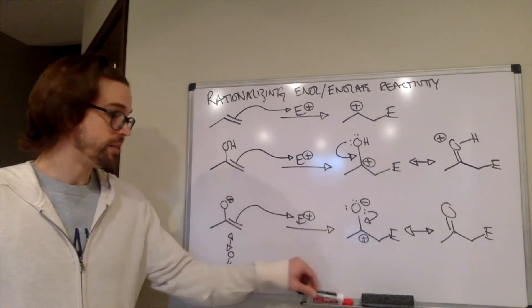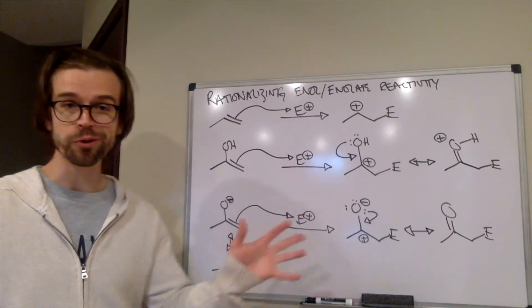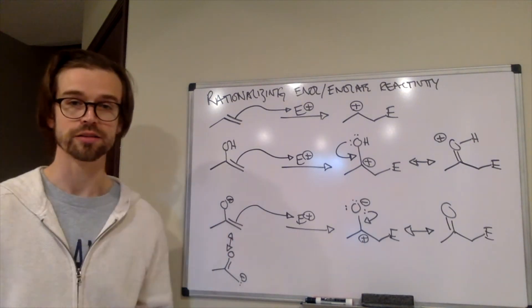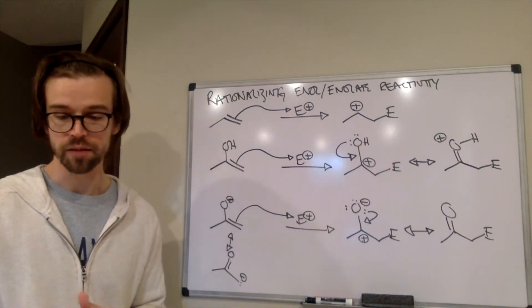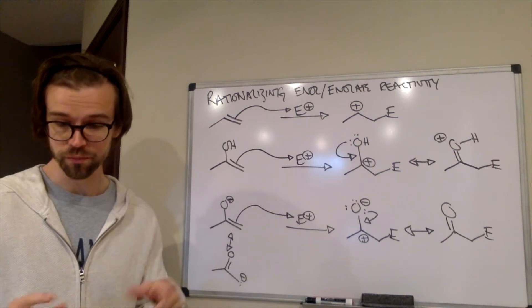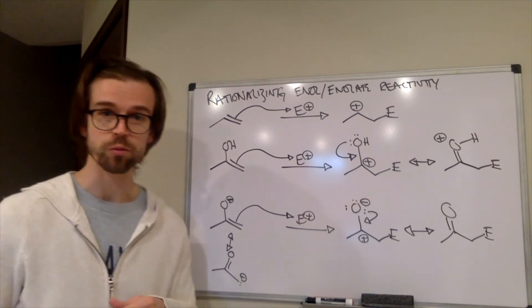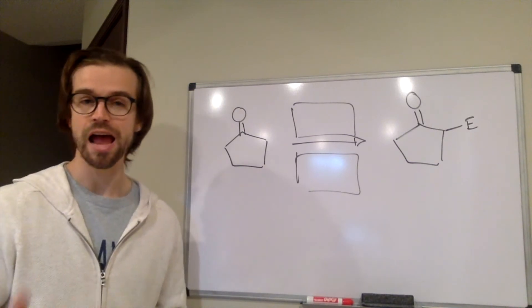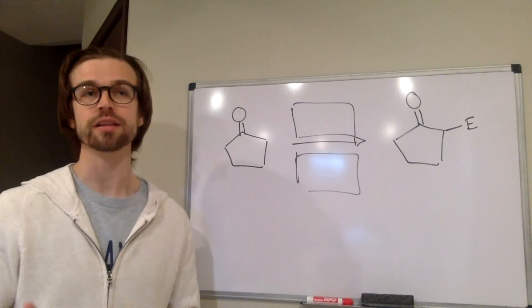So this shouldn't seem super new or super crazy. Hopefully, showing in the context of reactions we've learned before can demonstrate that to you. So more on this in one minute. Okay, so we've seen how the electrophiles are added to the pi bonds of an enolate or an enol.